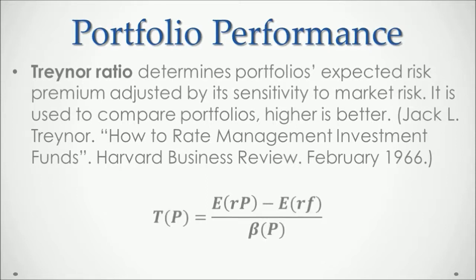As a formula, the Treynor ratio for the portfolio is equal to the expected portfolio return — its arithmetic mean — minus the arithmetic mean of the risk-free rate of return. Remember, this is the one-year treasury bill, divided by the portfolio beta. This is the same beta we calculated previously in our last section.